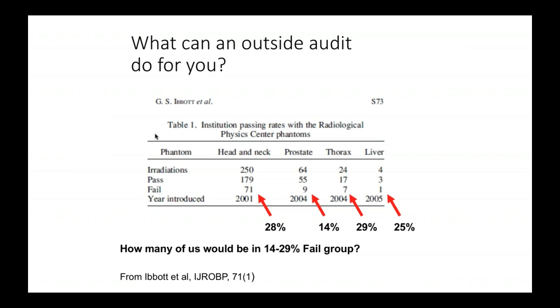This slide shows data from an audit. A study published in the Red Journal sent out a phantom to different institutions across the United States with a given treatment plan, asked them to deliver that plan to the phantom with a dosimeter in it, and then measured the dose to see whether the prescribed dose was actually what was delivered. They checked for variation across centers, and obviously some centers failed — this is just to illustrate that this is a problem present even in the United States.